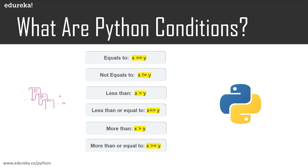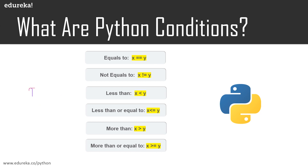You will be able to understand these conditions better when I show you the example, because when we are using if statements, it's actually a decision-making statement. We have a condition — if it is true, we execute certain statements, and if it is false, we skip the execution. So just to show you what these conditions are, I have mentioned all of them.